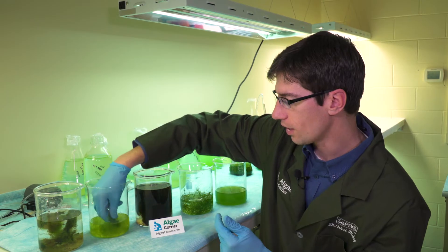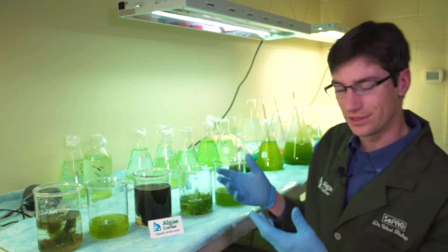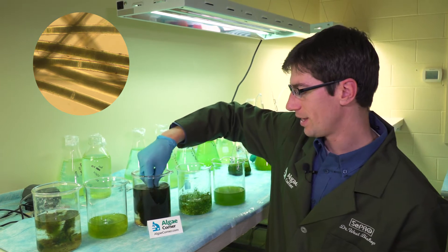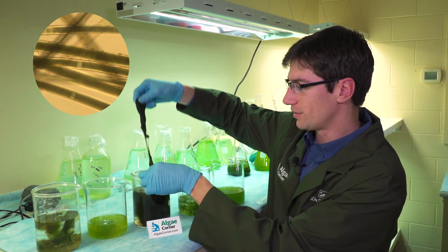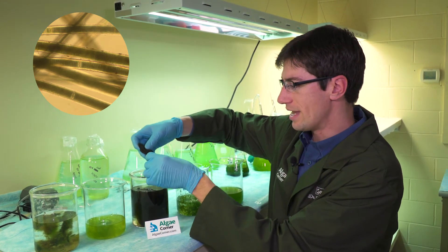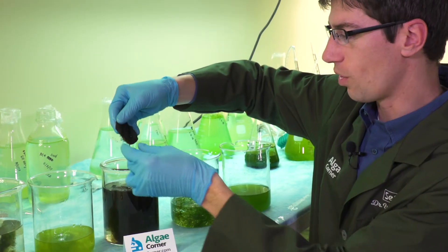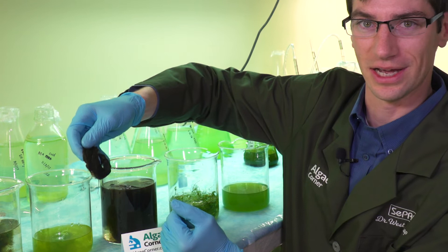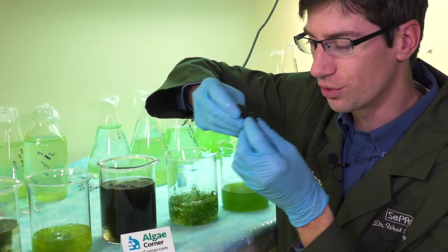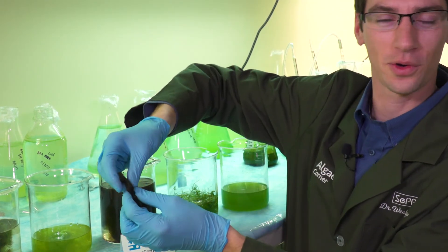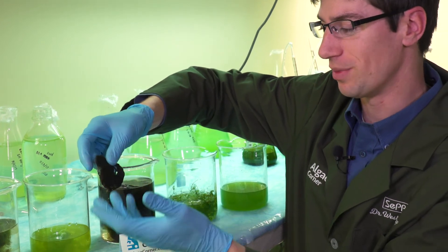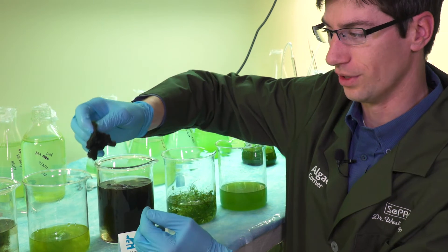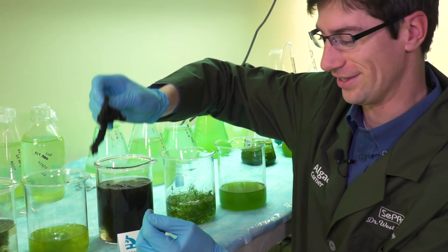Another algae you may run into are these thick black filamentous mats, and this is Lyngbya. Lyngbya is a filamentous cyanobacterium, often dark in color. It can grow way down in the sediments and appear almost black in nature. This smells bad too—it produces some taste and odor compounds, MIB and geosmin, making it smell dirty and fishy. Again, this can be a potential toxin producer, so wash your hands after you touch it.